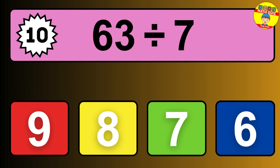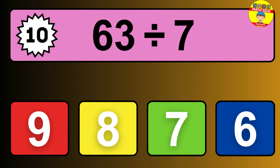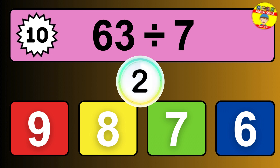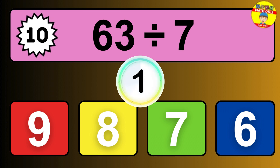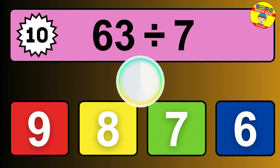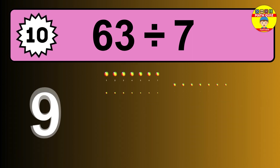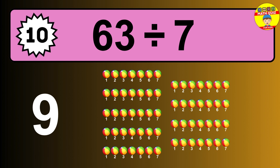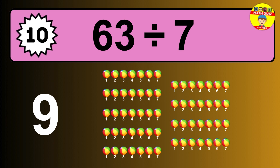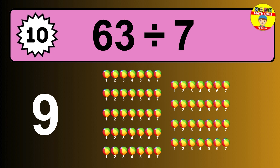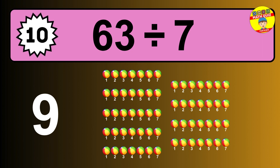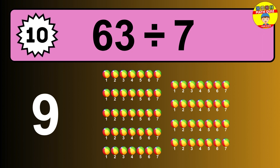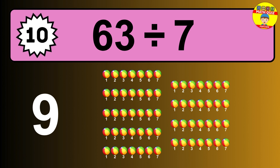63 divided by 7 is... time to think. Let's go to the solution. Divide the number 63 by 7. Each group contains 7 units. So dividing 63 by 7 results in 9 equal groups. Thus, the result is... 63 divided by 7 equals 9.